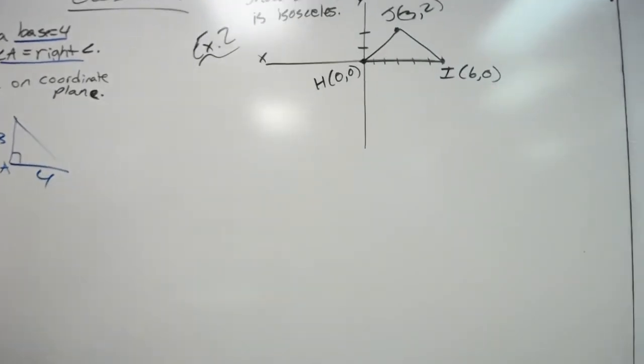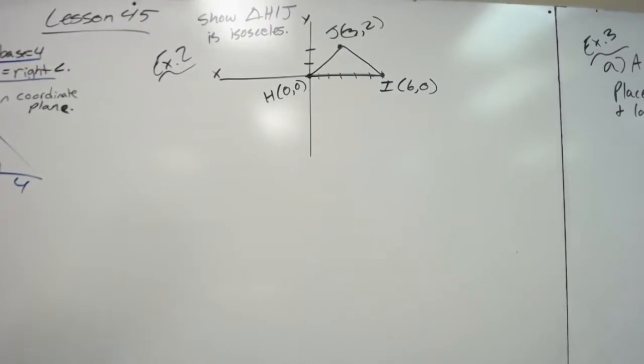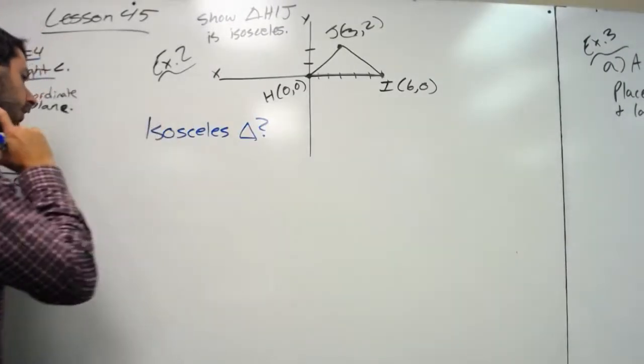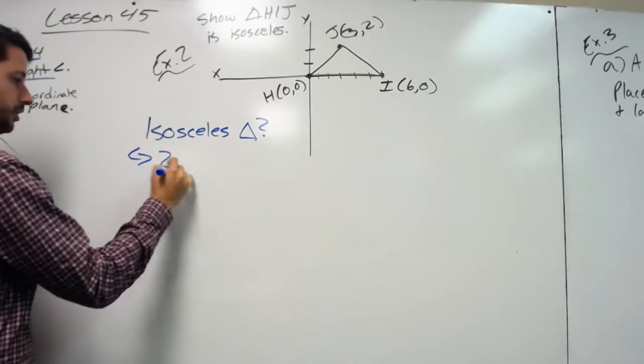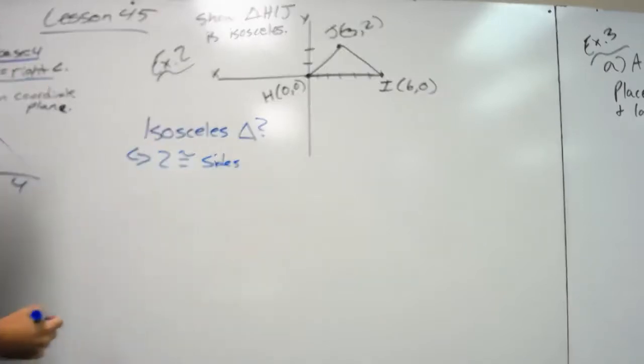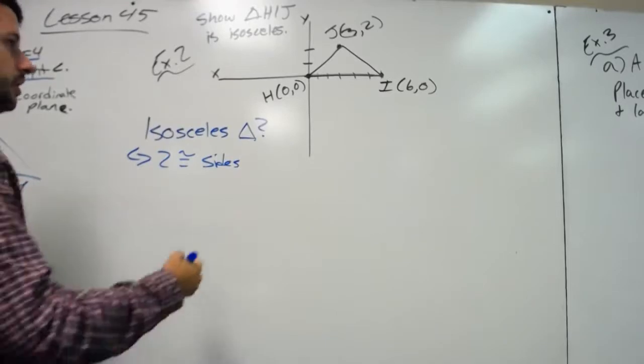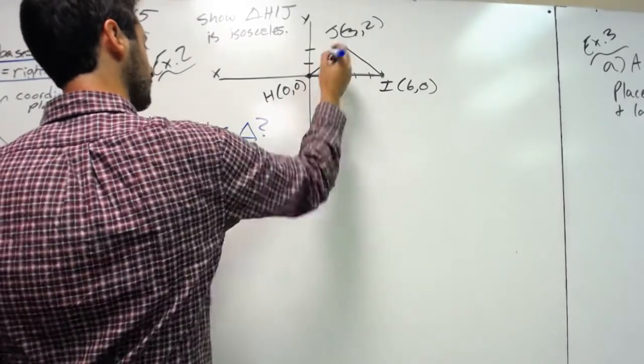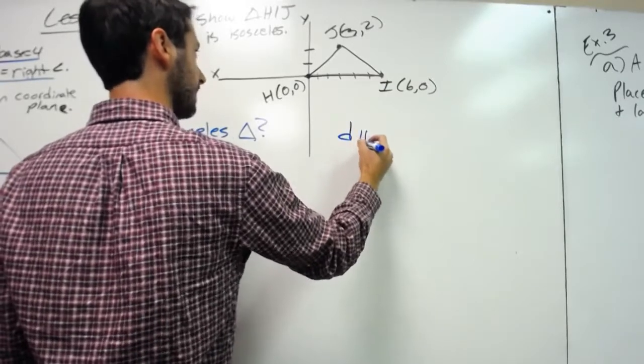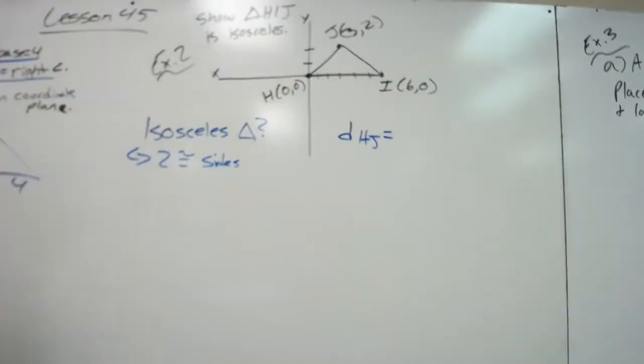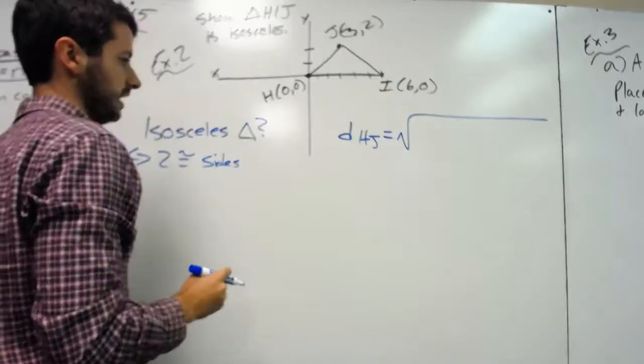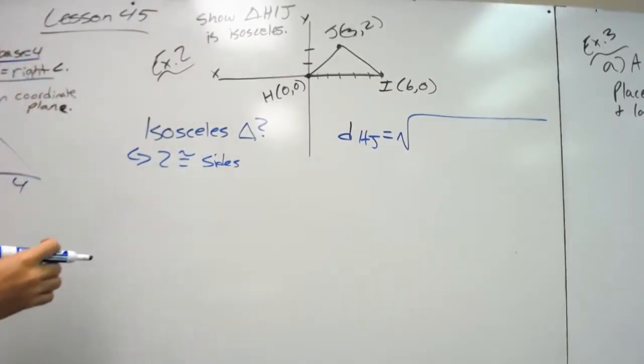Now let's look at another one. Example 2 says triangle HIJ is isosceles. It wants us to prove that triangle HIJ is isosceles. Well, what do we know about isosceles triangles? Well, when we hear the word isosceles, that should automatically inform us that it has two congruent sides. So we need to show that two of these sides are congruent. How can we show that if we don't have the length of it? Well, if you remember, to find the distance between two coordinates, we're going to use the distance formula. So if I said distance of HIJ and we did the distance formula, x2 minus x1, all that stuff, then we're going to be able to find the distance or the length of this side. And so what we need to do is do the distance formula for all three sides and then see if we have two congruent ones.